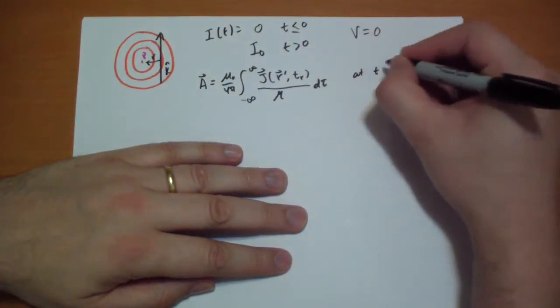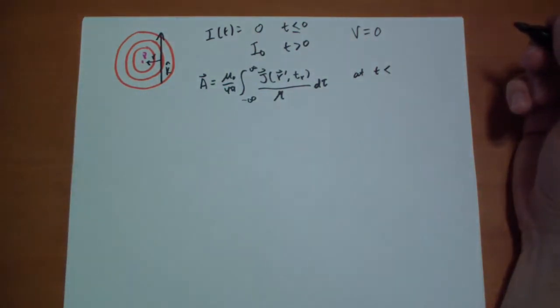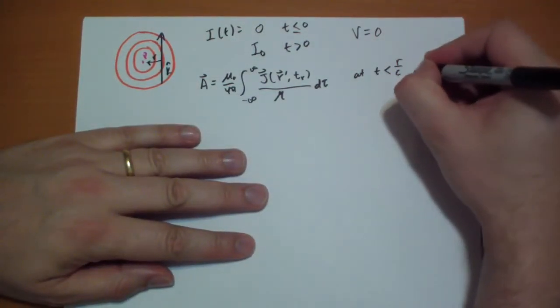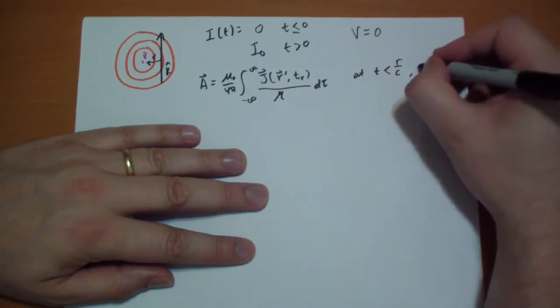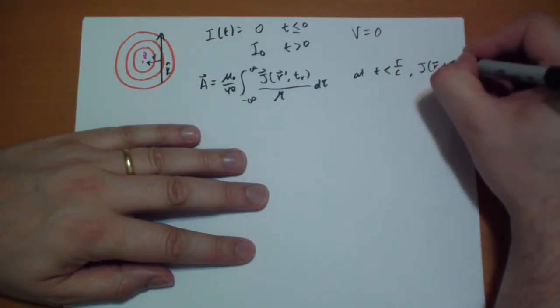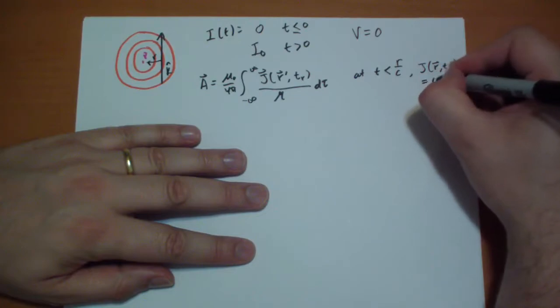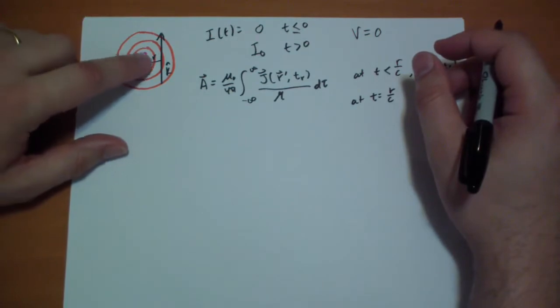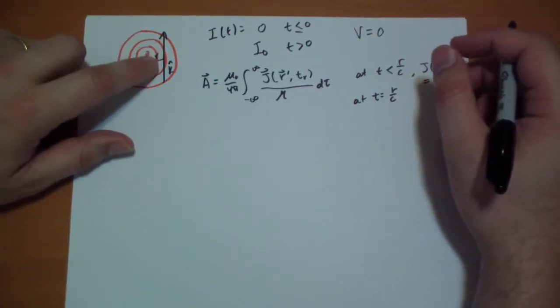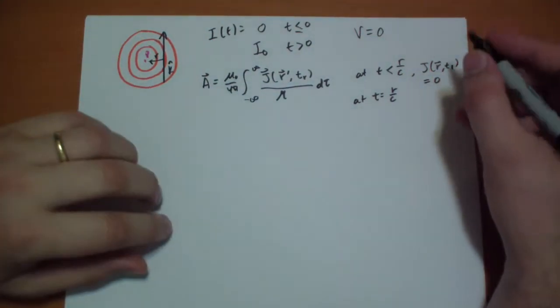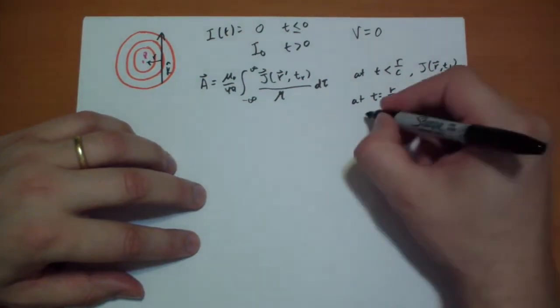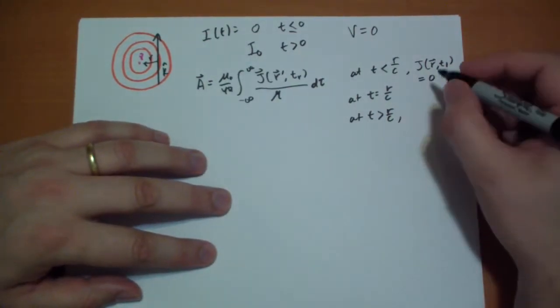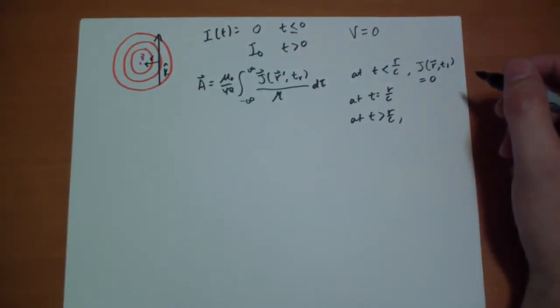And so, at t less than r over c, J will always be zero. At t equals r over c, that's when we just touch the point when the current just turns on in time and space. So only at that point. And at t greater than r over c, we have a length of wire where the current is turned on and all the rest of it is turned off. And the length of that wire goes...